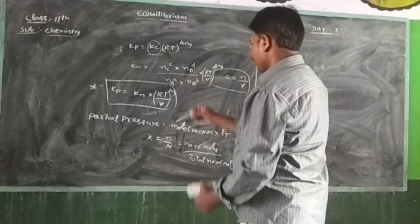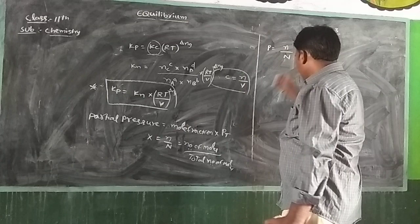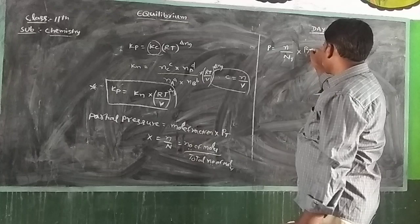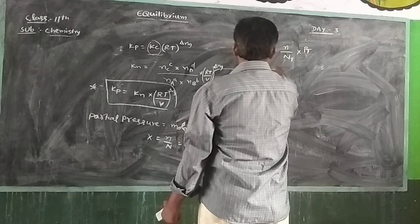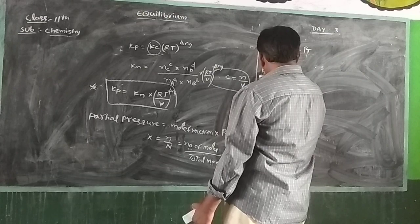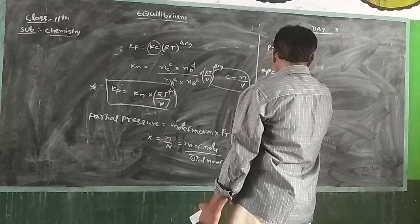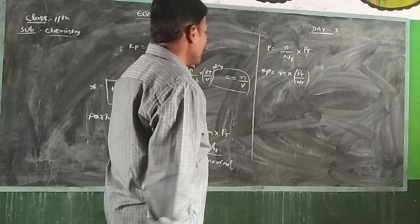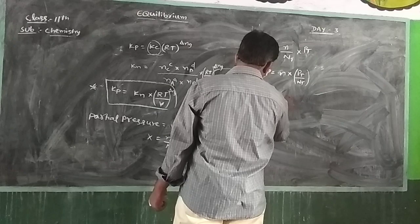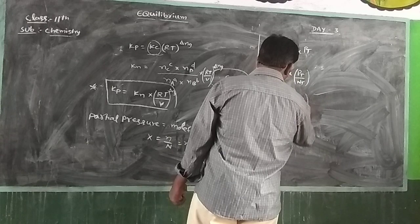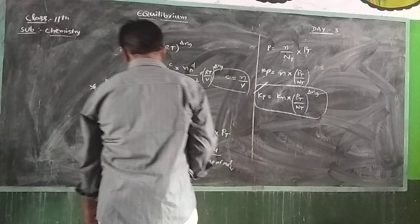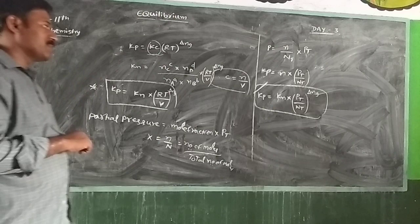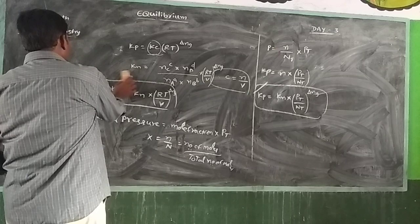Using this expression for Kp: partial pressure equals (N/Nt) into total pressure Pt. So Kp equals Kn into (Pt/Nt)^ΔNg. This is another relation for Kp and Kn: Kp equals Kn·(Pt/Nt)^ΔNg.